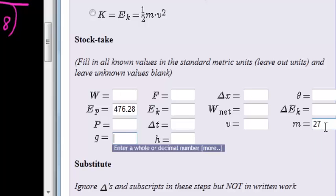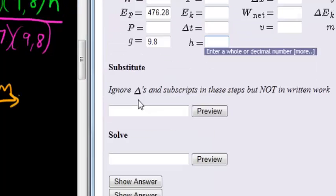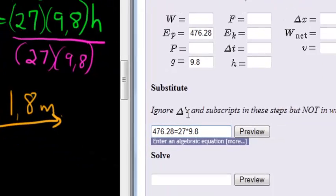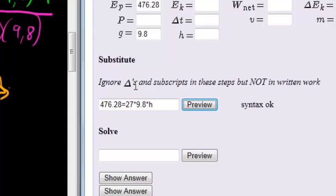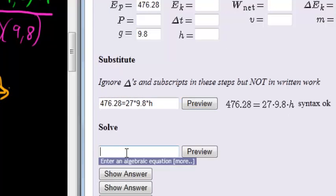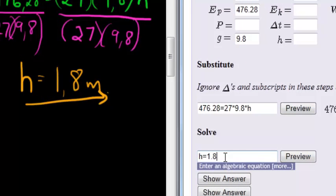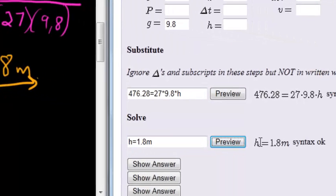Gravity also plays a part here, 9.8. Height, not known. That's what we have to calculate. And when we substitute it in, you can substitute that second step where we had 476.28 equals 27 times 9.8 times height. Preview, it's looking good. And when we calculated our height, we got 1.8 meters. Preview, perfect.